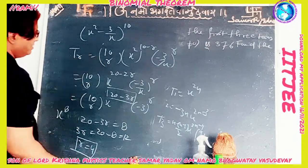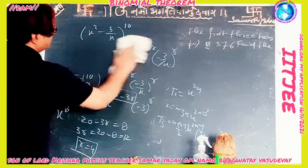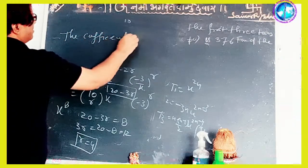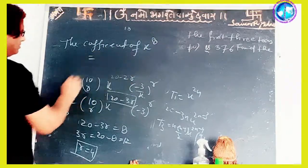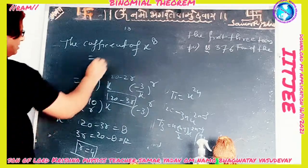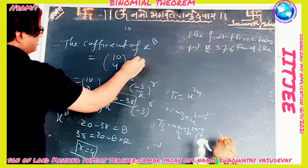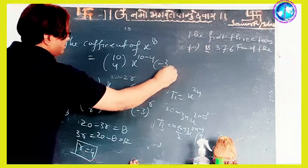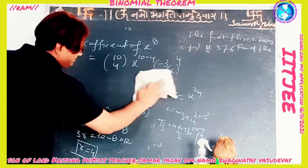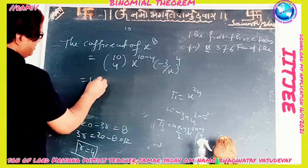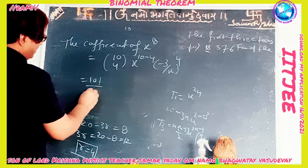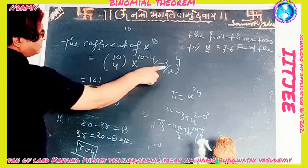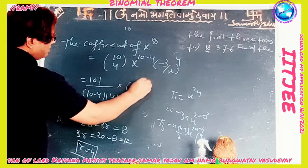Keeping r = 4, the coefficient of x^8 is 10C4 · (-3)^4 = 10! / (6! · 4!) · 81.